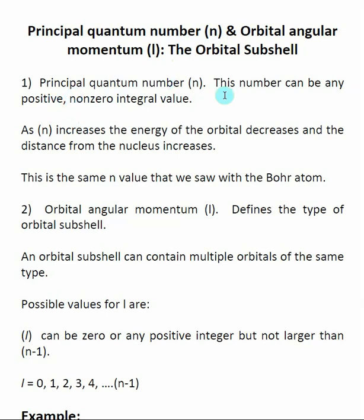The principal quantum number n can be any positive nonzero integer value. n is related to the distance of the electron from the nucleus — as n increases, the electron gets further away. Also, as n increases, the energy of that orbital decreases because the electron is getting further away from the positive charge. This n value is the same one we saw in the Bohr atom, and it's related to stationary states.